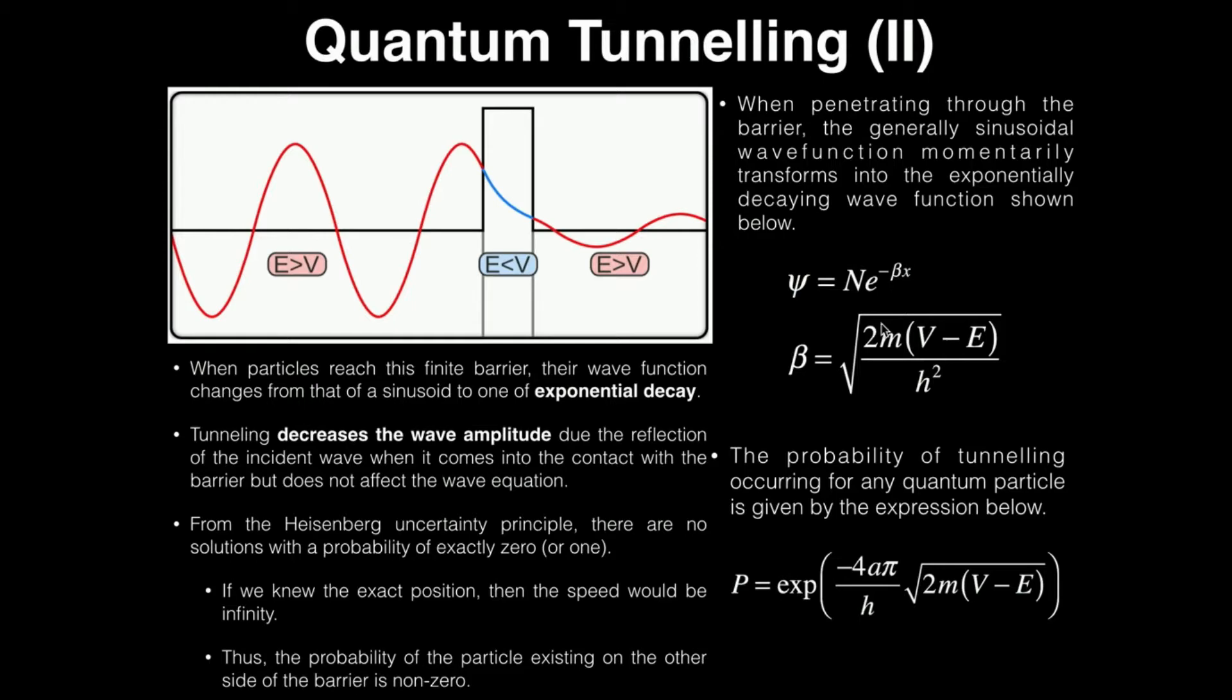And this β is equal to all of this expression right here. And so that's your wave function inside the barrier. And then once it gets across the barrier, it goes back to a sinusoidal wave function, but you'll notice the amplitude of it is decreased. The wave function itself does not change, but the amplitude does decrease when it gets across to the other side of the barrier.